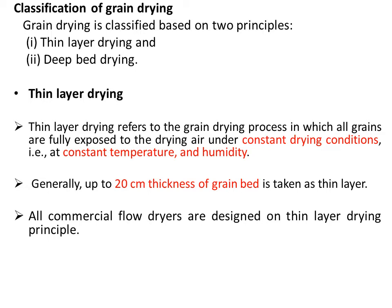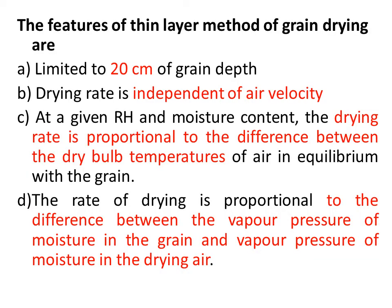Now we'll move towards the classification of grain drying. There are two methods: first, thin layer drying, and second, deep bed drying. In thin layer drying, the grain bed must be around 20 centimeters thick. All commercial flow dryers are designed on the thin layer drying principle because it gives constant drying conditions — for example, constant temperature and humidity.